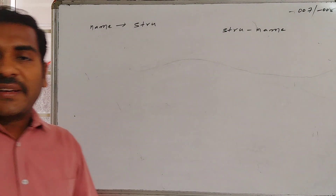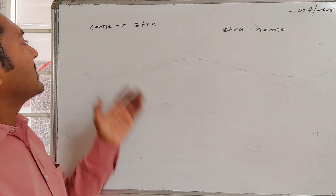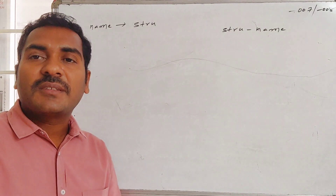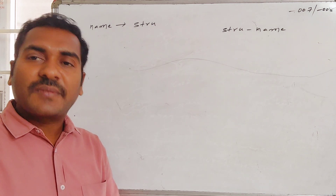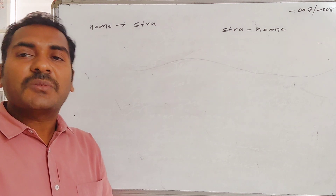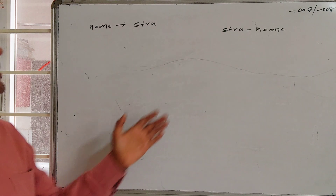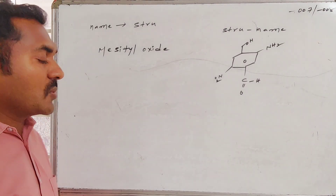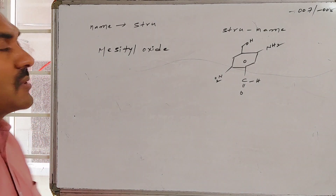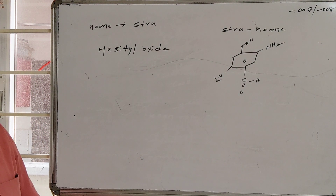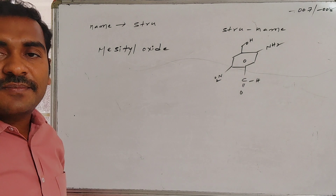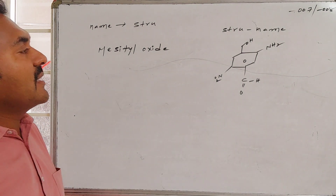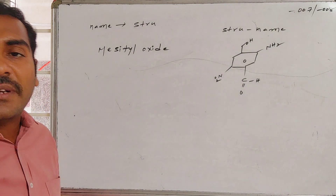In previous exams, two varieties of questions are asked: conversion from name to structure, and conversion from structure to name. The questions asked of us are to write the structure from the name, and the name from the structure. Two such problems are given — first, the common name mesityl oxide is provided and we are asked to write the IUPAC name and its structure; secondly, a structure is provided and we are asked to write the IUPAC name.